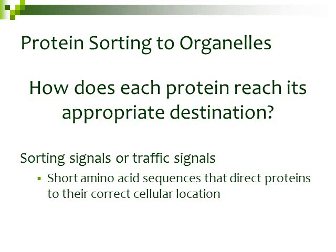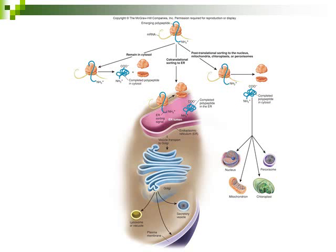The last part of this chapter looks at protein sorting — how does each protein being created in the cell reach its appropriate destination? The answer is that the cell puts sorting signals or traffic signals onto these proteins. These signals are short amino acid sequences that tell the protein where it should go in the cell.